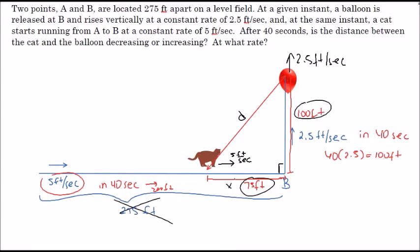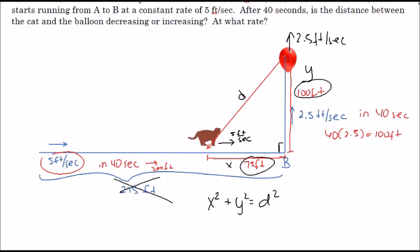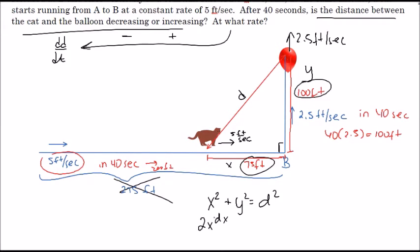Let's set up the relationship between these three sides. Let's call this x and this y. What we have is x² + y² = d². It's a standard Pythagorean theorem, but I want to know if the distance is increasing or decreasing, so I'm looking for dd/dt. We take the derivative with respect to time: 2x(dx/dt) + 2y(dy/dt) = 2d(dd/dt).